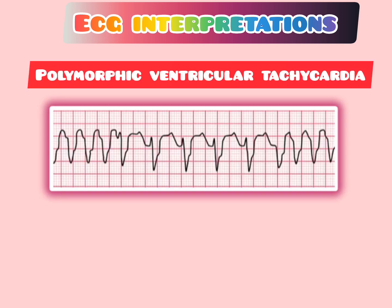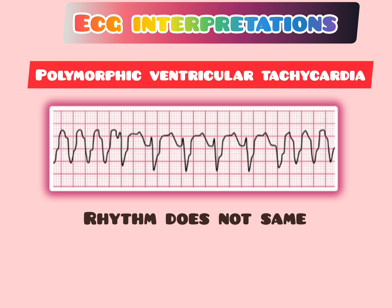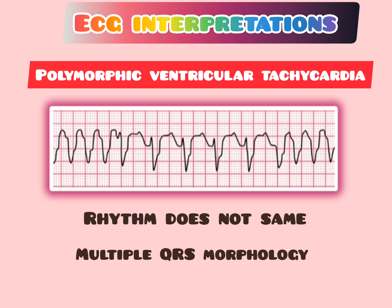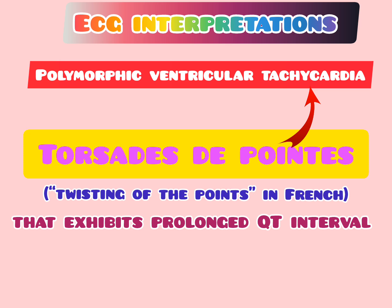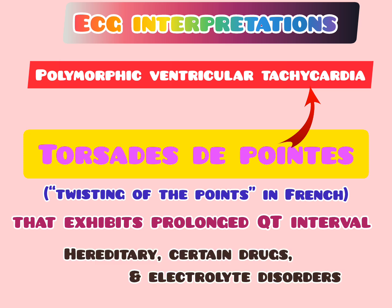The other presentation is polymorphic ventricular tachycardia, where the rhythm is irregular and has multiple QRS morphologies — the size and shape of the QRS complex varies. Torsade de pointes is a type of polymorphic V-T that exhibits a long QT interval. Its causes may be hereditary, certain drugs, or electrolyte disorders.